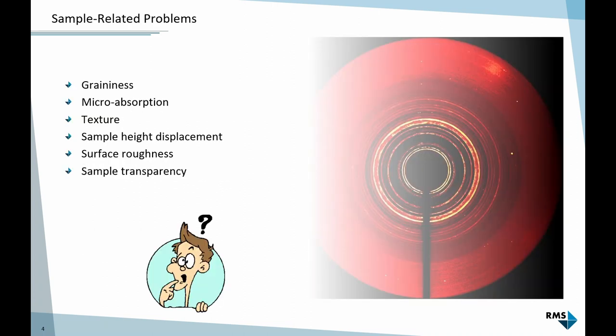There's a whole list of things we can do wrong: graininess, microabsorption, texture, sample height displacement, sample roughness, sample transparency. I want to go quickly through all of these to show you what the problem is and how it manifests in the diffraction pattern.